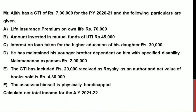In the year 2016 exam, we have one five-marks question. Mr. Ajita has a gross total income of seven lakhs for the previous year 2021. The following particulars are given: life insurance premium paid thirty thousand, amount invested in mutual funds of UTI forty-five thousand, interest on loan taken for education for his daughter thirty thousand, he has maintained a younger brother dependent on him who has a specified disability, maintenance expenses two lakhs, and GTA included twenty thousand rupees received as royalty as an author, and net value of books sold is four lakhs thirty thousand.